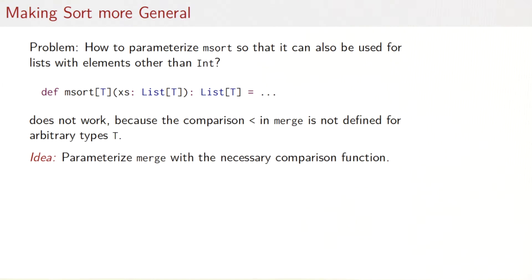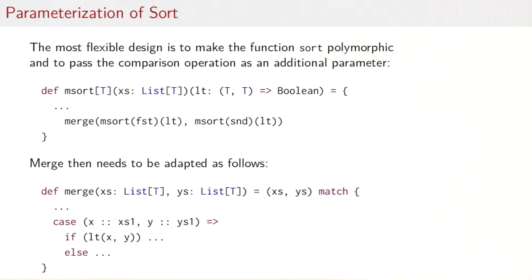The next refinement of our idea would be to parameterize merge with the necessary comparison function. So let's see how that would work. We would have a polymorphic function m sort with a type parameter t. And in addition to the list that we pass to m sort, we also pass a less than function with an lt here that takes two t's and returns a boolean. And the contract for lt would be that it should return the result of comparing its two elements with a less than.